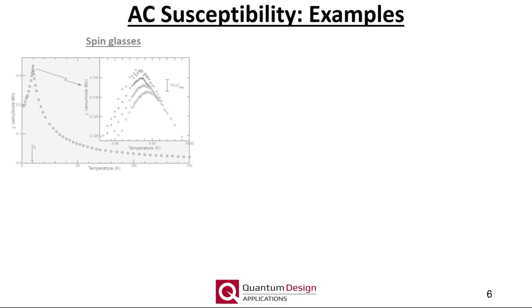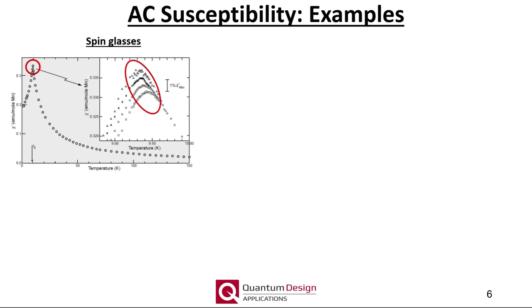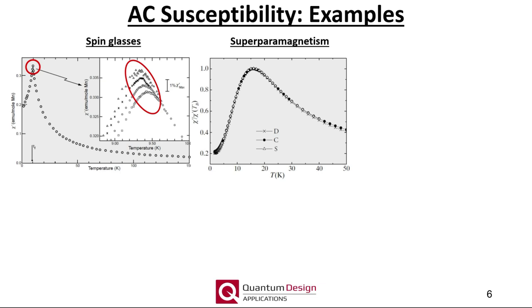AC susceptibility measurements can prove useful for a wide variety of samples. For example, the temperature dependence of a spin glass exhibits a sharp cusp indicating the freezing temperature. Furthermore, the frequency dependence of this cusp can be used to further study the various damping mechanisms and interactions at play. Similarly, superparamagnetic samples are also often studied using an AC susceptometer, where the blocking temperature is a critical material property.